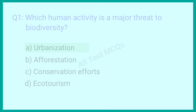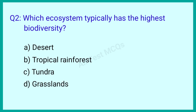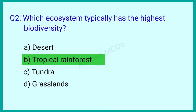Question number 2: Which ecosystem typically has the highest biodiversity? The correct answer is option B: Tropical rainforest.